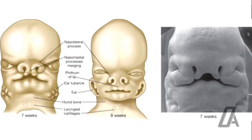The lateral nasal process forms the ala of the nose. The medial nasal processes of both sides fuse to form the globular process in the middle, which gives rise to the tip of the nose, columella, the philtrum, the labial tuberculum of the upper lip, the frenulum, and the entire primary palate. The maxillary process forms the alveolus bearing teeth distal to the canines, and the secondary palate. The area of fusion of the maxillary and mandibular processes forms the commissures or corners of the mouth. As the two processes grow towards the fellow of the opposite side, the stomodeum is narrowed.